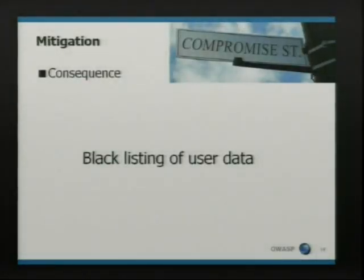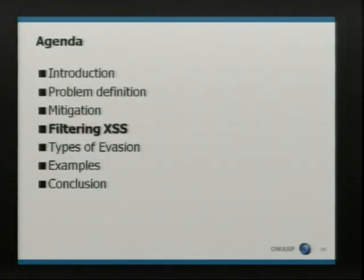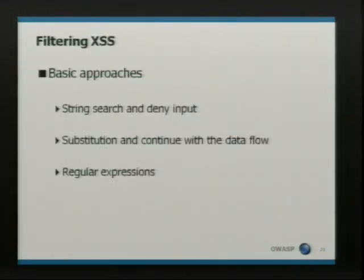So what happens next — we should find a compromise. And the compromise is usually to define a blacklist, because this does not affect the functionality of an application if you've already built it. So how should we filter now? There are three approaches that I saw in different kinds of source code from customers.